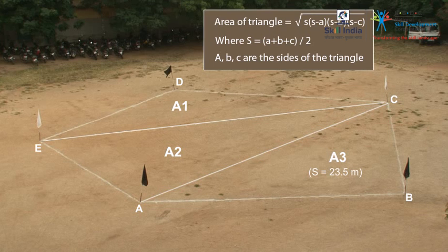So substituting this S and lengths of AB, BC, and AC gives the area of triangle ABC as 80.11 square meters.